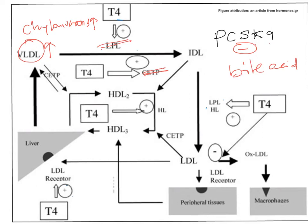With decreased hepatic lipase function in hypothyroidism, conversion of HDL2 into HDL3 is reduced, leading to accumulation of HDL2 in the circulation. Since HDL2 is rich in both triglycerides and cholesterol ester, its accumulation contributes to hypertriacylglycerolemia and also to hypercholesterolemia.